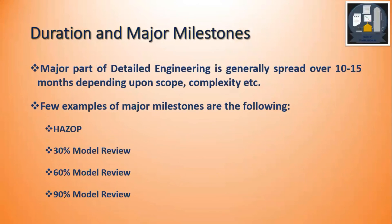Next we come to duration and major milestones. The major part of detailed engineering is generally spread between 10 to 15 months, though this is not absolute — it may vary depending on the scope and complexity of the project. Within the detailed engineering schedule, there are many milestones; examples include percentage completion milestones such as 30%, 60%, 90%, etc.